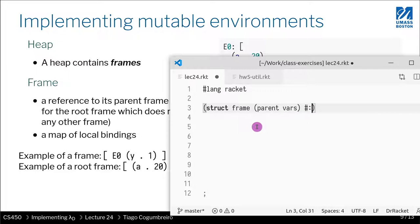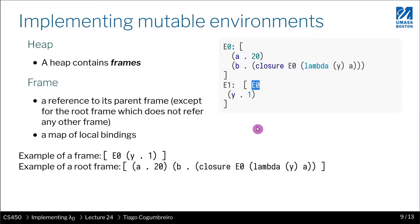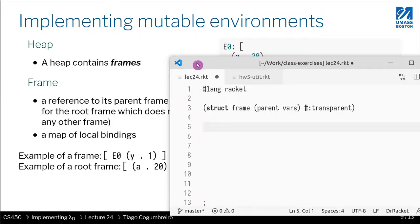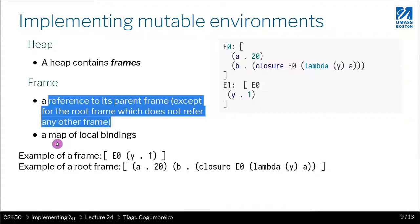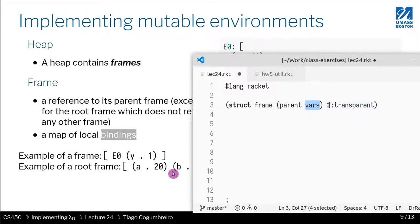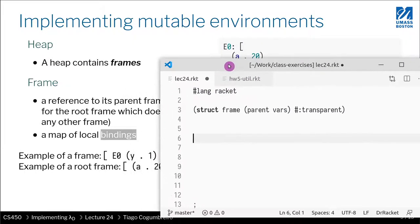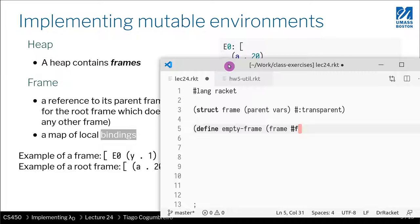We want to make this transparent. We have these two things: first, a reference to parent, and second, a map of local bindings called vars. For an empty frame, the parent is false — in Racket, the convention is that false is like 'no'. Everything that is not false is true, and it's convention to use false as a default value when you don't know what to use. So false means no parent, and an empty hash table means empty vars.